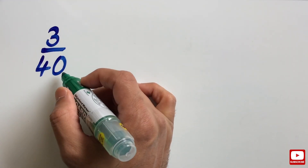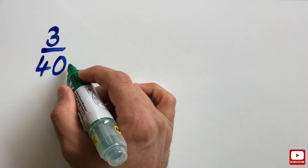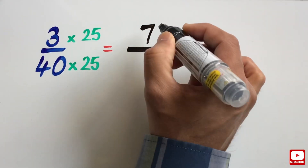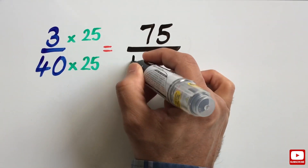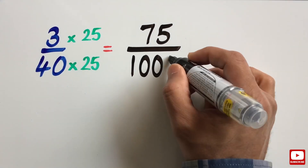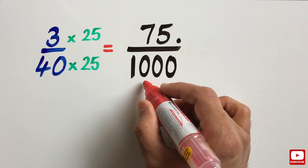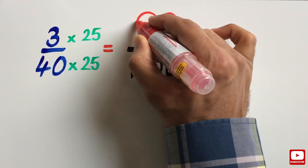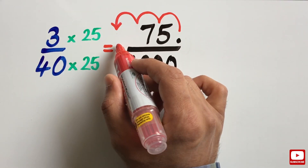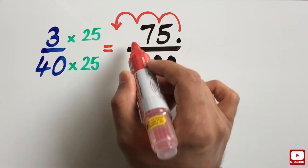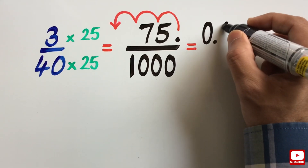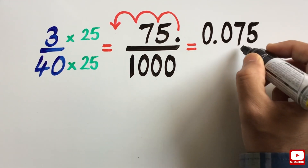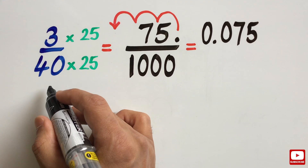To make the denominator a power of 10 in this example, we need to multiply 40 by 25. Multiplying the fraction by 25, we get 75 over 1000. Since we are dividing by 1000, we move the decimal point three places to the left and fill the empty placeholder with a zero. So we get 0.075 as the decimal form of the fraction 3 over 40.